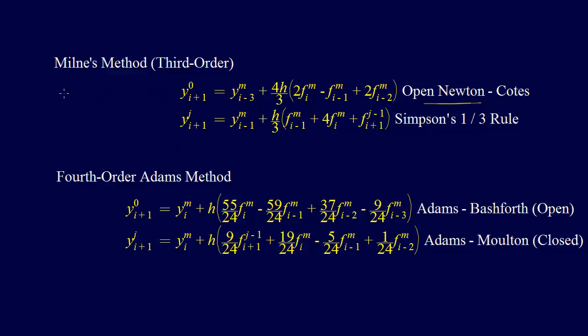So this is the predictor for Milne's method. And then we have the corrector. And the corrector uses a closed integration formula. It uses Simpson's one-third rule. So then we, in the same way as we did with Hahn's method, the iterative Hahn's method,